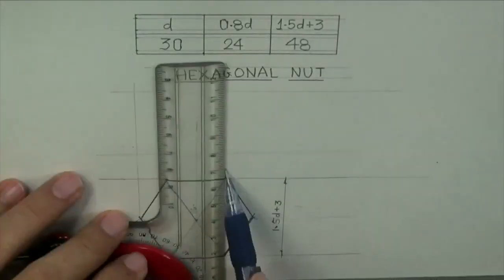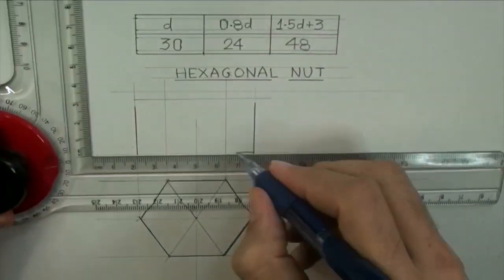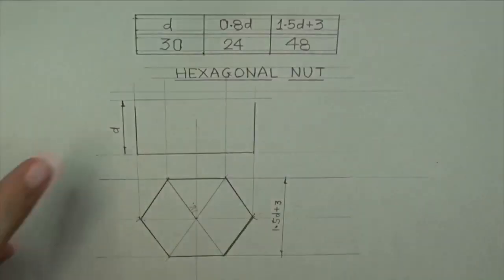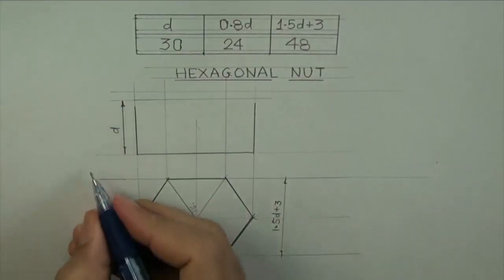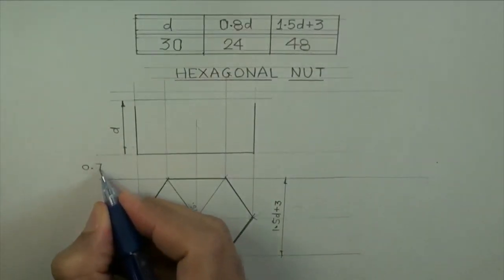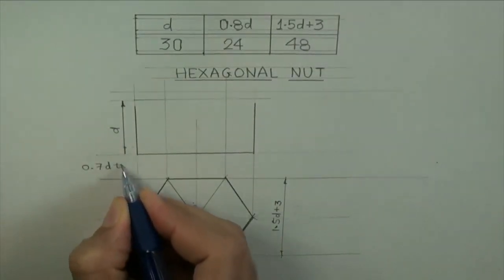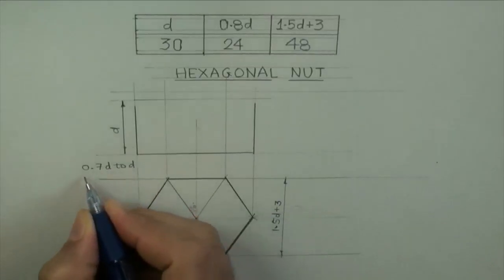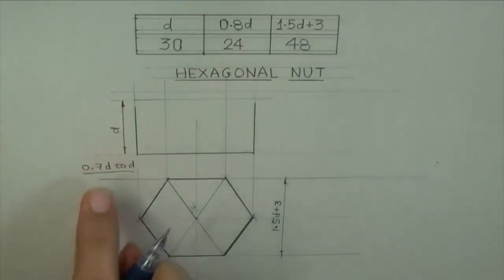This is called hexagonal cross flat. Now we will draw head, head of the nut. Now this is D. It can be anything from 0.7D to D. I am taking D. So we are drawing the head front view of hexagonal nut.